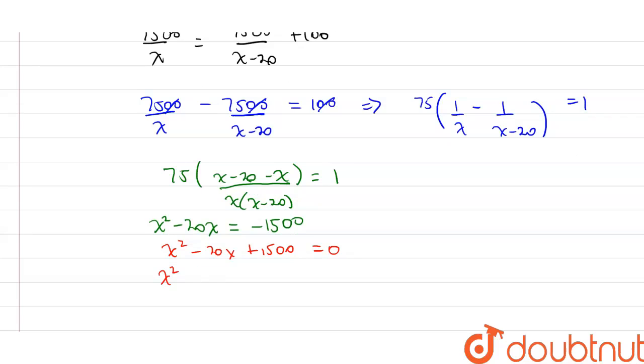...we get x squared minus 50x plus 30x plus 1500 is equal to 0. So this implies x is equal to 50 or x is equal to minus 30.